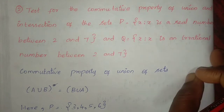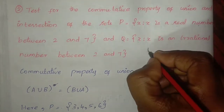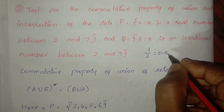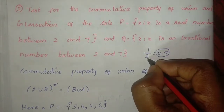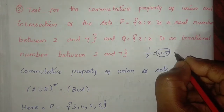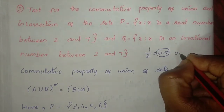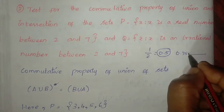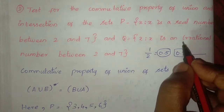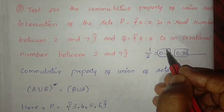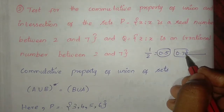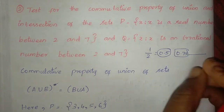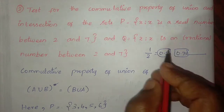For set Q: x such that x is an irrational number between 2 and 7. Rational numbers are like 1/2 equals 0.5, or 0.75 — defined decimals. Irrational numbers are non-terminating, non-repeating decimals. Examples include root 2, pi (approximately 3.14), where the decimal value does not repeat.